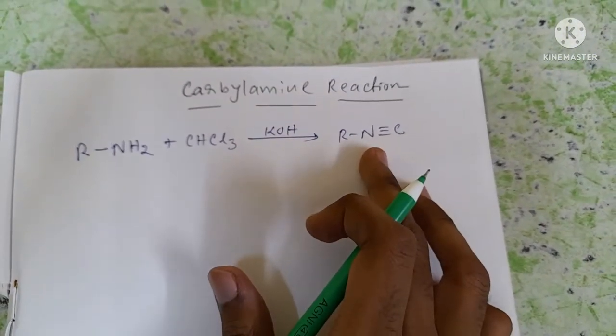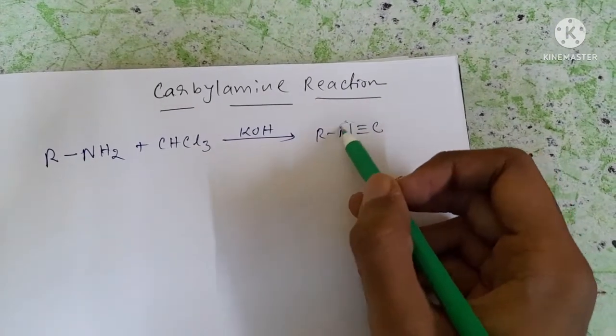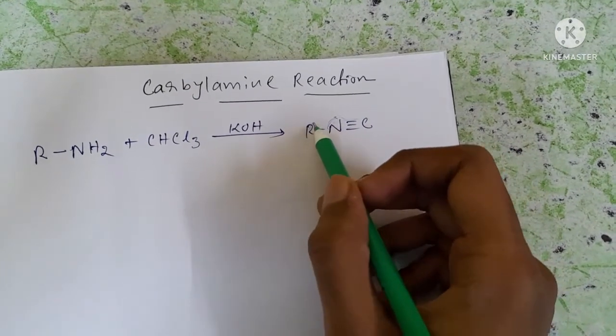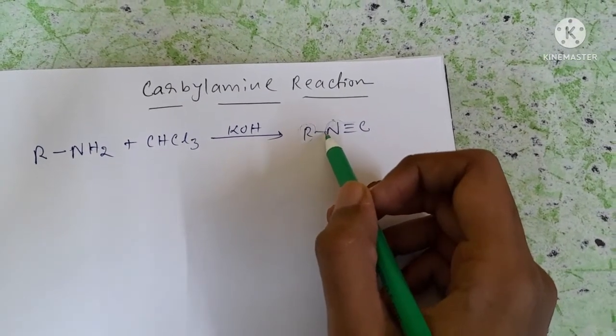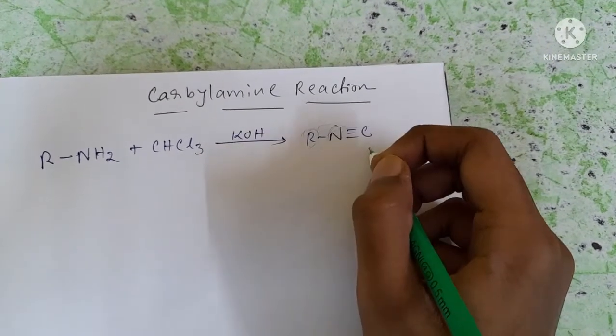The ultimate product is alkyl isocyanide. Nitrogen and carbon are connected with a triple bond, and on the other side, the alkyl group is connected with the nitrogen through a single bond. This compound is known as alkyl isocyanide.